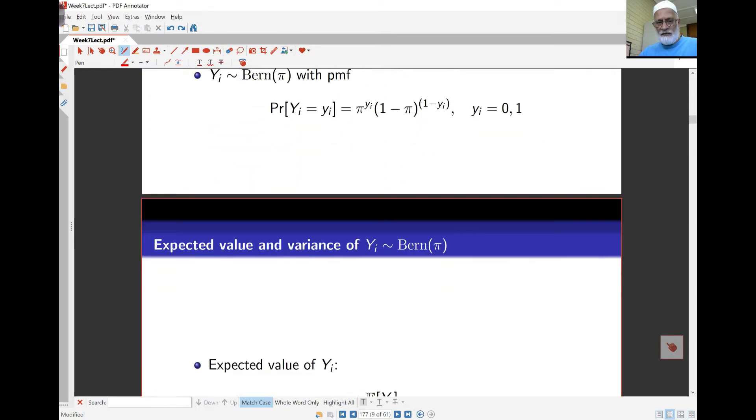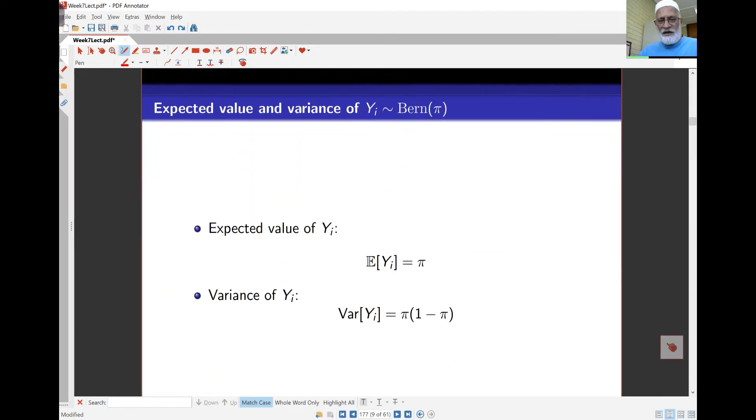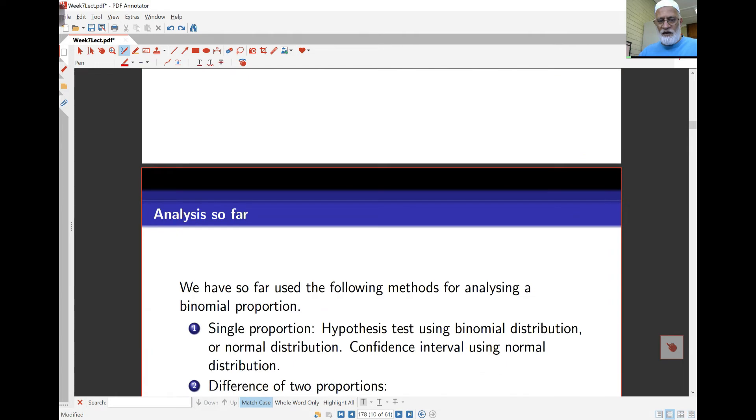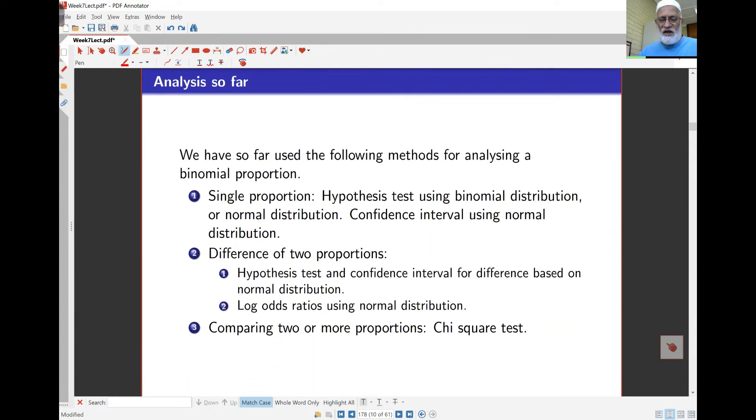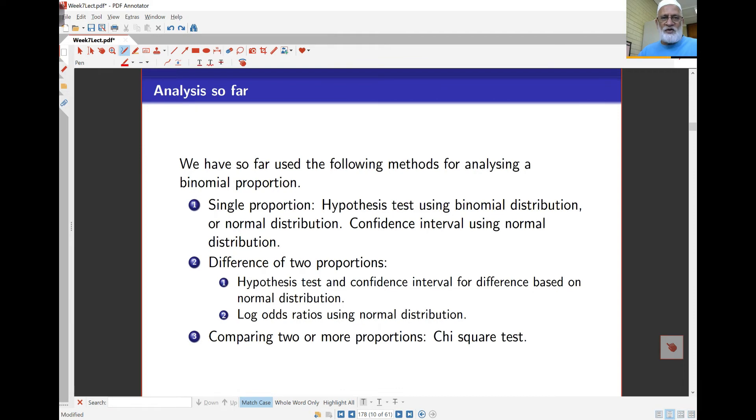What we know already is that the mean for yi is πi and the variance is πi times (1 - πi). So far what we've done in terms of analysis is look at this as a two-way table. We've taken a look at single proportions for hypothesis tests, or difference of proportions, or chi-squared tests, or compared odds ratios.